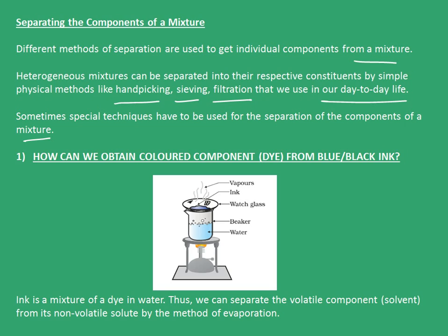The first one is: how can we obtain the colored component, that is dye, from blue or black ink? Ink is a mixture of dye in water. Thus, we can separate the volatile component, the solvent, from its non-volatile solute by the method of evaporation.